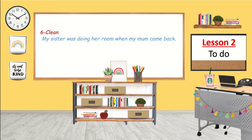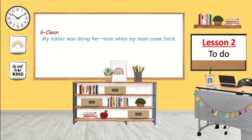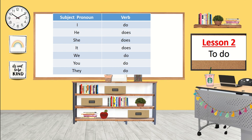Do also means 'to clean' — for example: My sister was doing her room when my mom came back, meaning she was cleaning her room. Now we understand that 'do' has a number of meanings. Note that the form depends on the subject: I do, he does, she does, it does, we do, you do, they do. 'Does' ends with the sound /z/.